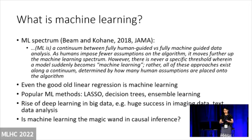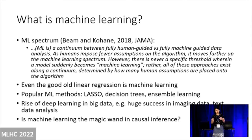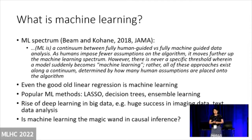Whether it's deep learning or more traditional machine learning, the key thing is not machine learning — the key thing is actually causal inference, because fundamentally you want to do causal inference. Machine learning is a toolbox. So my question is: do we have this wonderful tool called machine learning, but is it really the magic wand in causal inference? Of course, the answer is no.